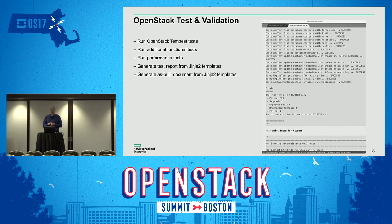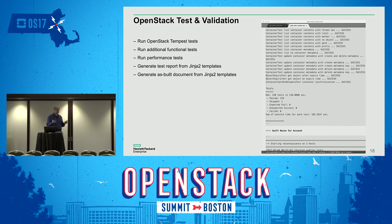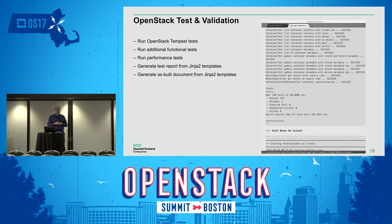After deployment, I run OpenStack Tempest tests targeted for the solution type. There are additional functional tests for certain services — Swift developers prefer a different set of functional tests rather than Tempest. I run performance tests to make sure it's operating within an expected range. I keep a history of test reports every time they're run, then generate an as-built document using a combination of Jinja2 with Markdown templates, converting those Markdown templates to HTML for display in the installation environment, or converting to PDF for delivery.